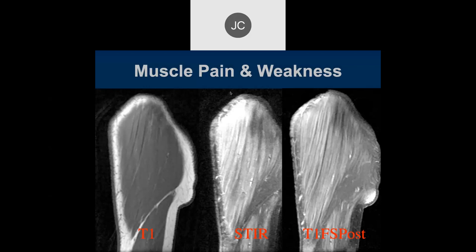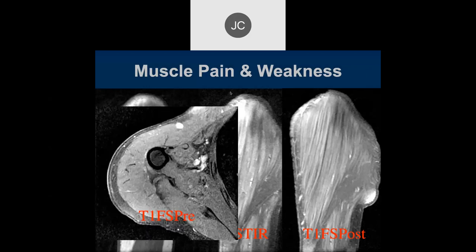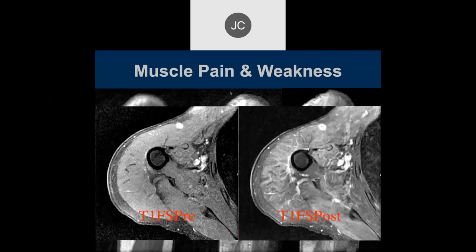You can't read enhancement unless you have a fat-saturated sequence — otherwise, as we've seen, you can have a lot of false positives. So there's a T1 fat-sat free, of course, that's in a different plane, and there's a T1 fat-sat post. So what do you think's going on here?